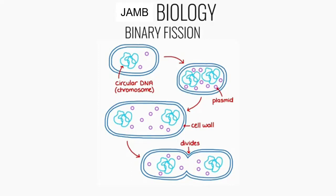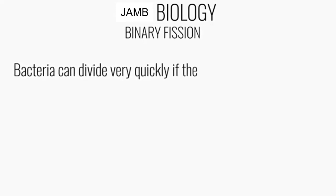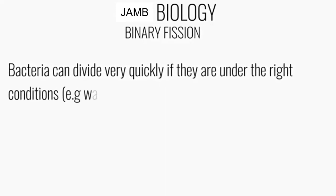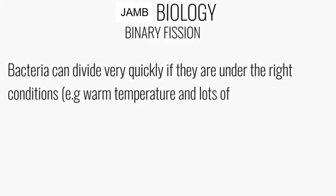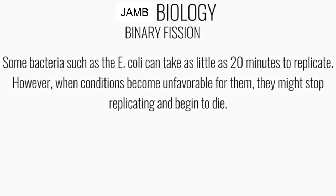When the cytoplasm fully divides, two new daughter cells are formed. Each daughter cell will have a copy of the DNA, but they might have variable numbers of plasmids. Bacteria can divide very quickly under the right conditions, such as a warm temperature and lots of nutrients. Some bacteria, such as E. coli, can take as little as 20 minutes to replicate. However, when conditions become unfavorable, bacteria can simply stop replicating and start dying off.